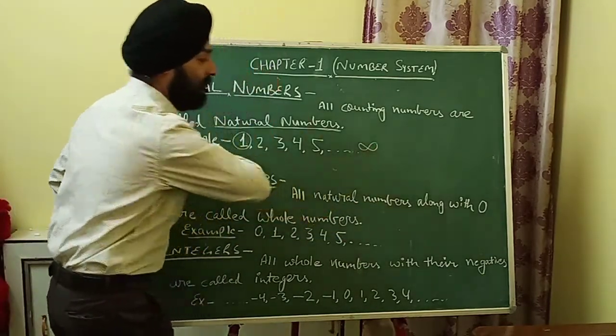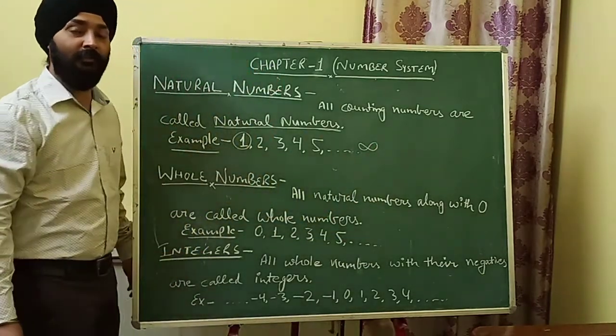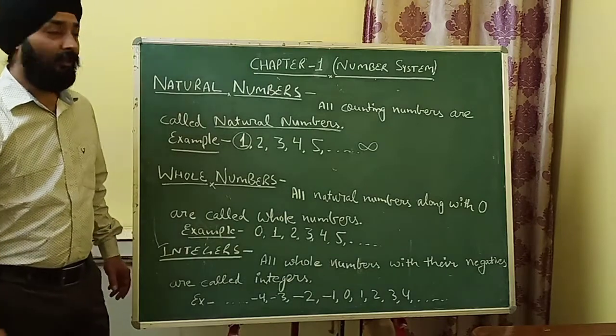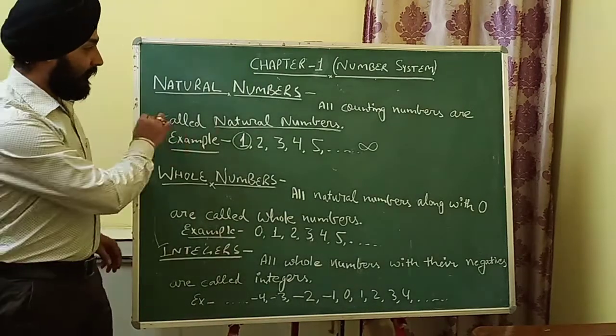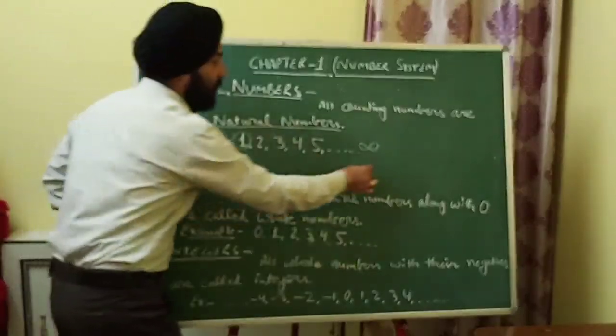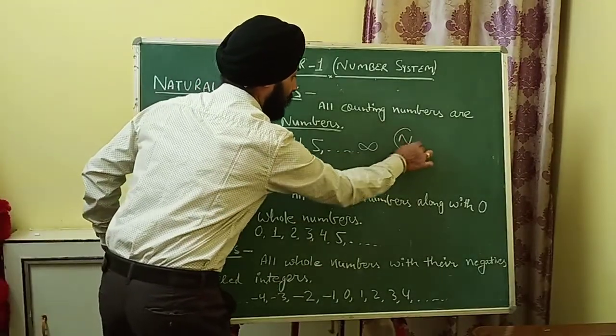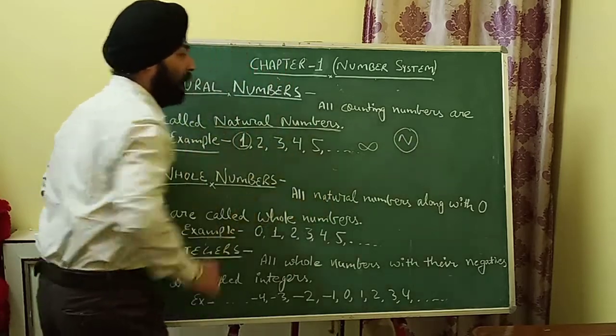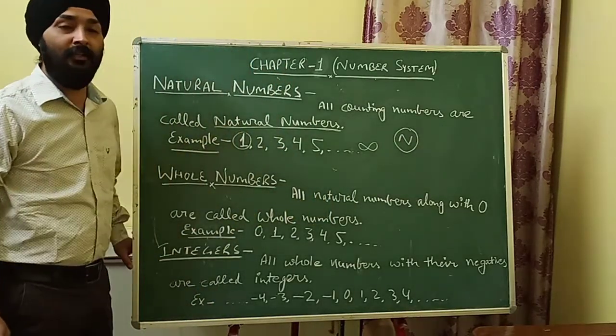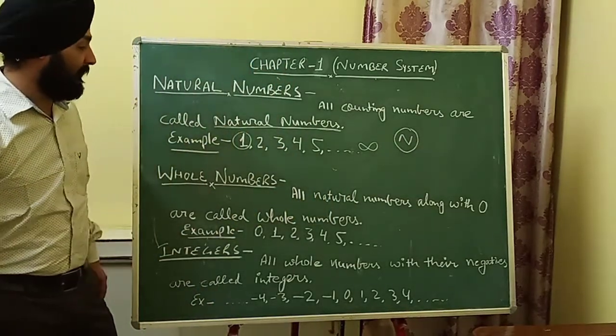What is the largest natural number? The largest natural number is infinity. Natural numbers are denoted by capital N.